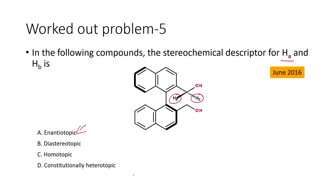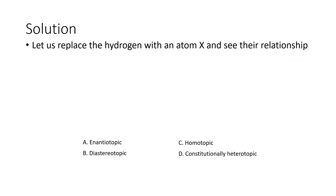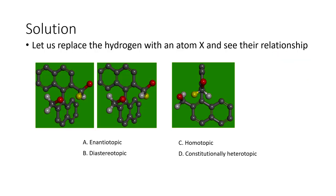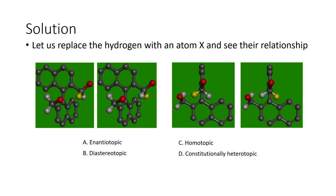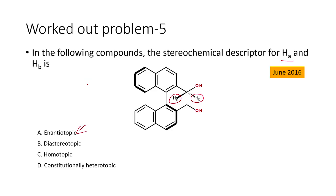This is very similar to what we have seen earlier, so we will quickly go through how to assign that. The same exercise applies: we have to replace the hydrogen atom. In this particular molecule we have an oxygen atom — here and here — which is basically the hydroxy group.